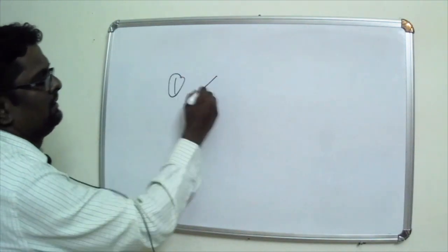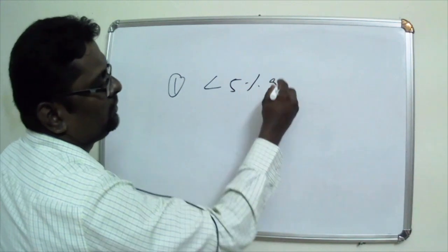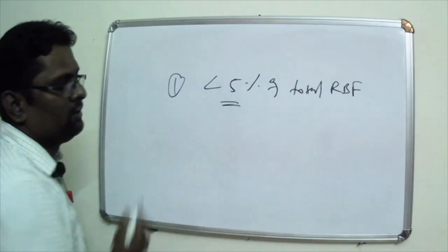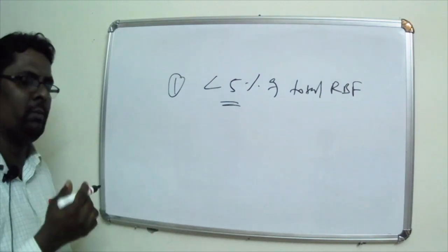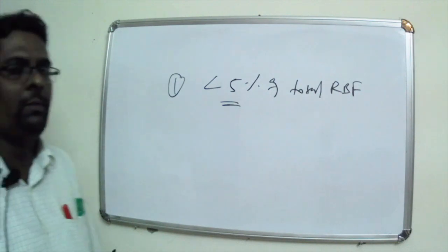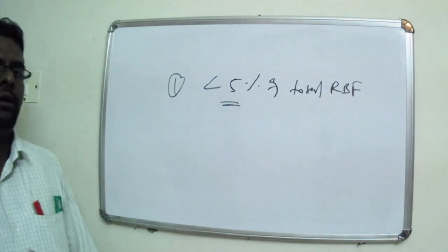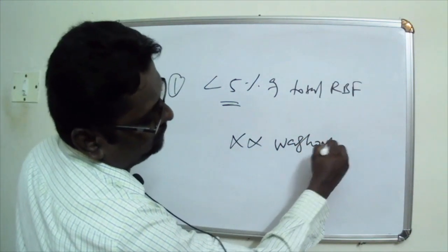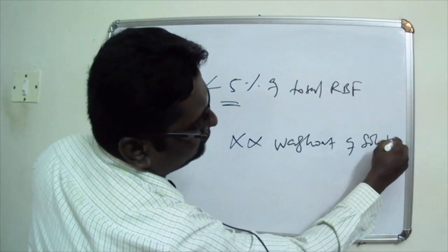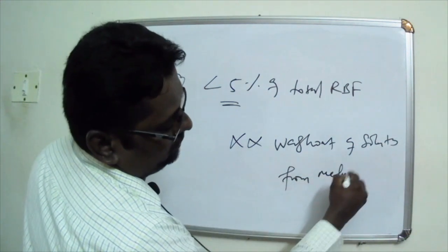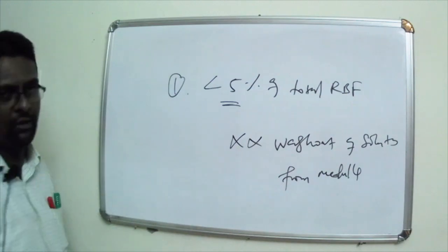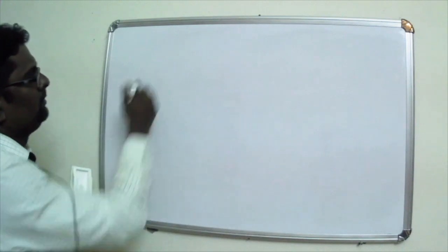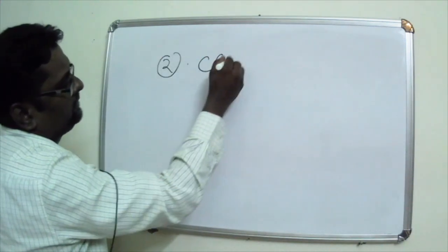The blood flow to the medulla is less than 5% of total renal blood flow. This small amount of blood flow to the medulla is sufficient to cover the metabolic needs of the medullary tissues, and it prevents the washout of solutes from the medulla. This is factor 1. Factor 2 is the counter-current exchange.